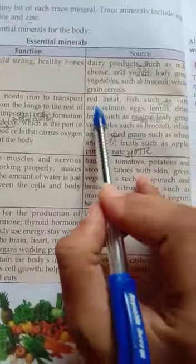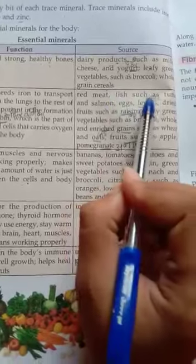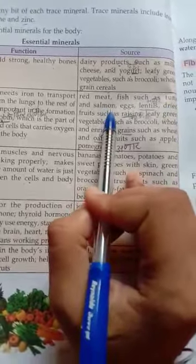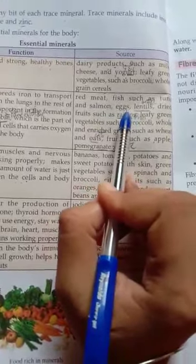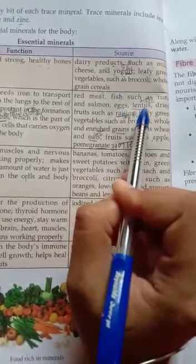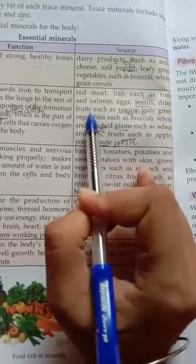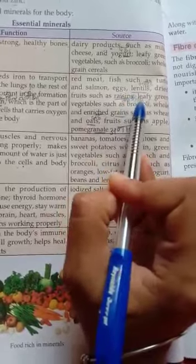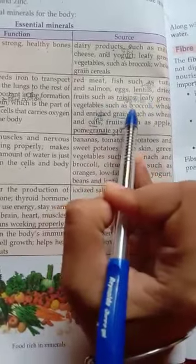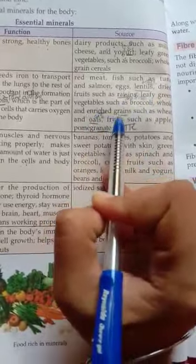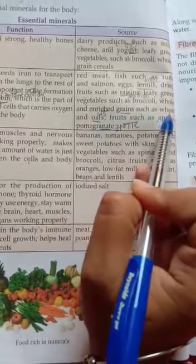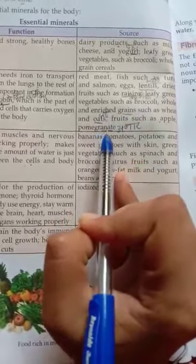Where do we find iron? Red meat, fish such as tuna and salmon, eggs, lentils, mushrooms, dry foods such as raisins, leafy green vegetables, broccoli, whole and enriched grains such as wheat and oats, and dry fruits such as apple, plum, and pomegranate.